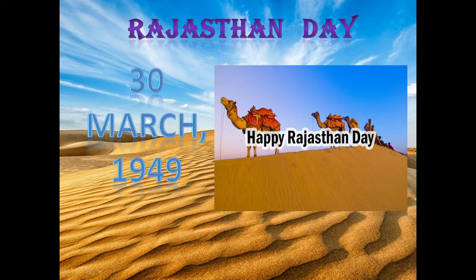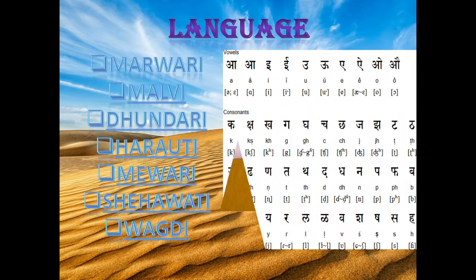Rajasthan Day is celebrated on 30 March 1949. The languages spoken in Rajasthan are Marwadi, Malvi, Dundadi, Hadoti, Mewadi, Shekhawati, and Wagadi.